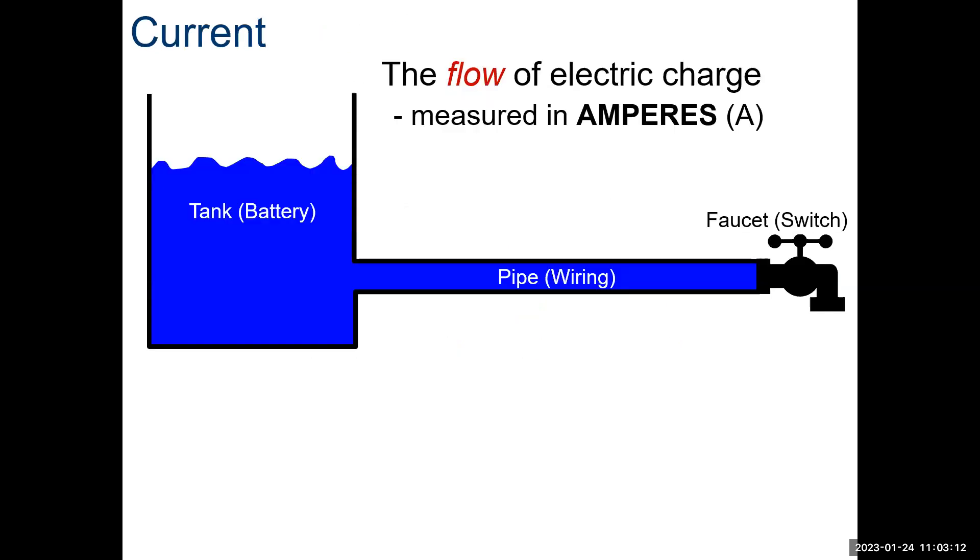This is by far the best analogy, I think, to electricity. We have a tank of water, right? We can think of that as a battery or just a source of electricity. And then we have a pipe that's going to fill with water. That could be our wiring. So, when we open that switch, when we hit the switch to the light or turn the stove on, that opens the valve and allows water to start flowing.